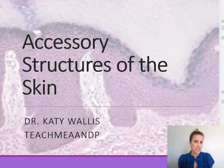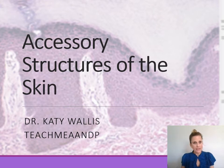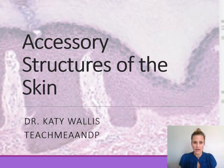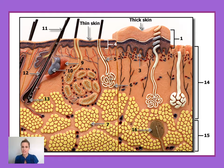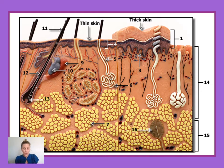We're going to continue on with our discussion of the Integumentary System Lab, and in this video we'll talk about all of the accessory structures of the skin. Here you see the model again that matches the model we use in lab — a model that shows us the layers of the skin, which we talked about in the previous video, as well as the accessory structures. In this video we're going to focus on the accessory structures.